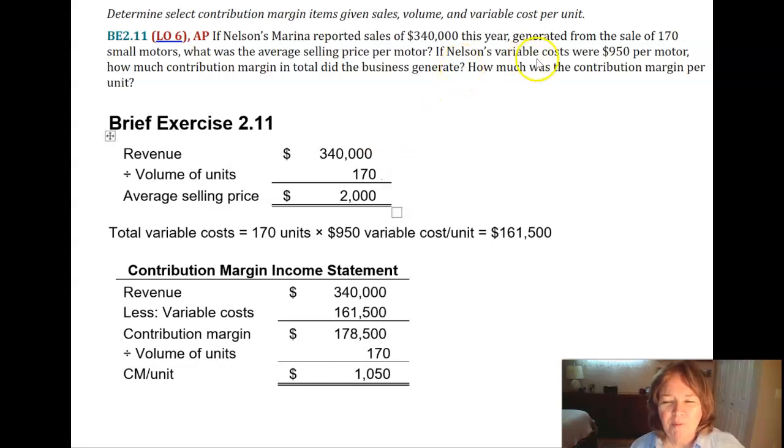If their variable costs were $950 per motor, how much contribution margin did the business generate? So they had sales of $340,000.